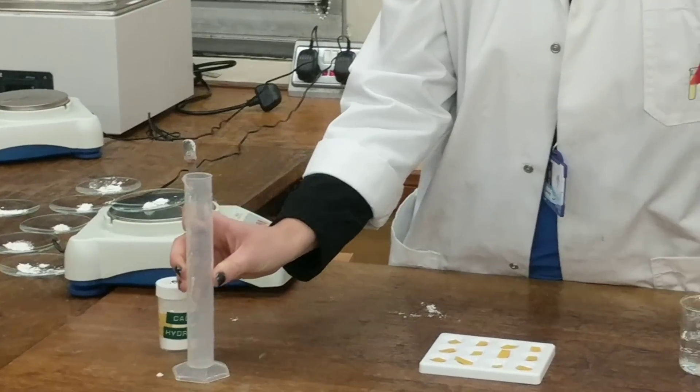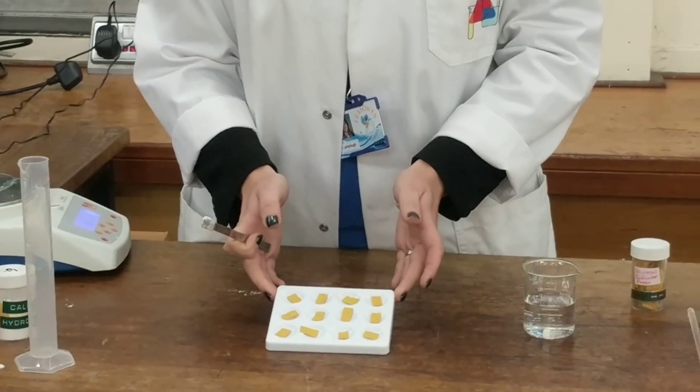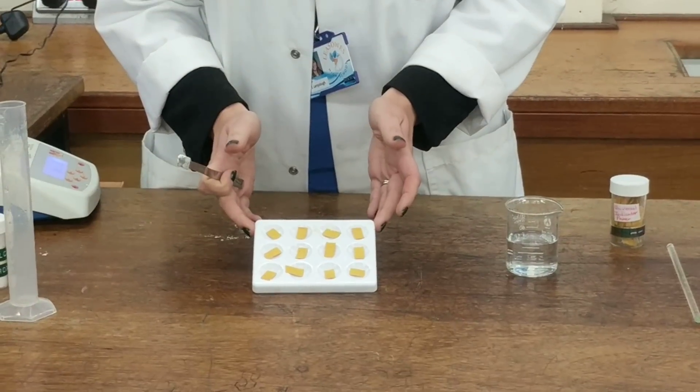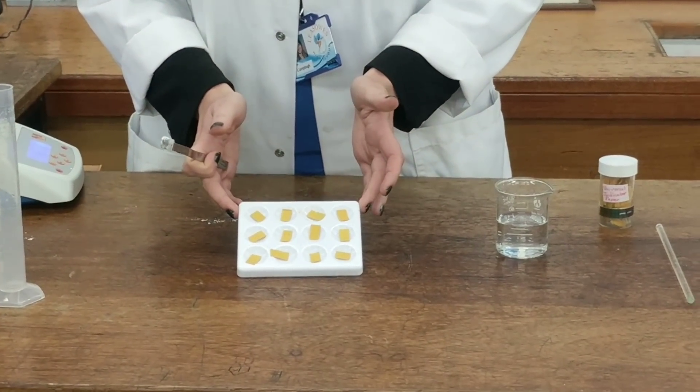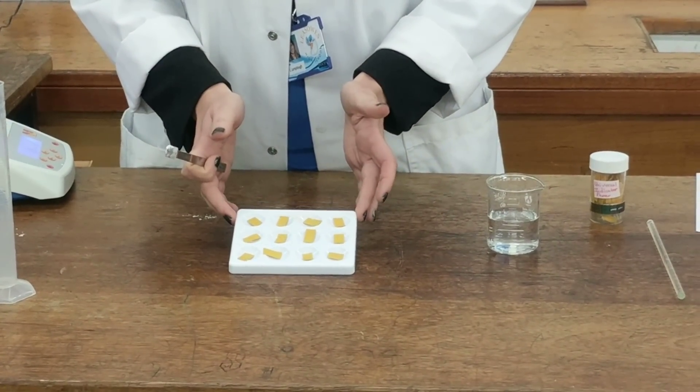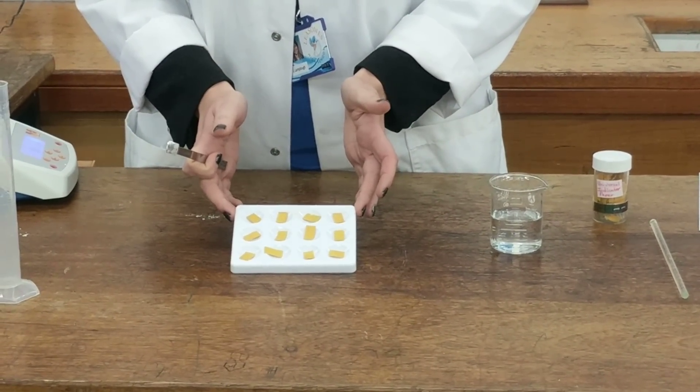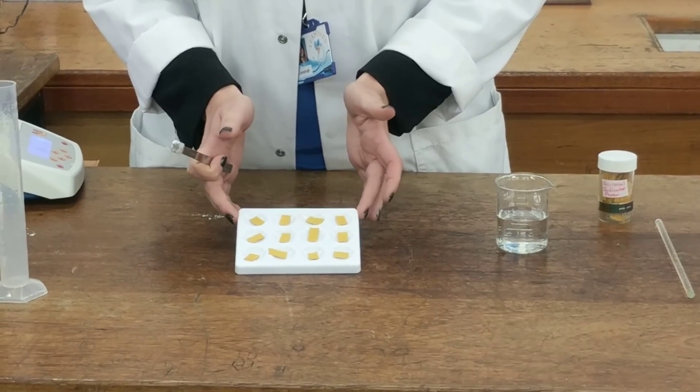We've got set up here a spotting tile with a piece of universal indicator in each well. This will be able to tell us whether the solution is an acid, an alkali and when indeed it has neutralised.